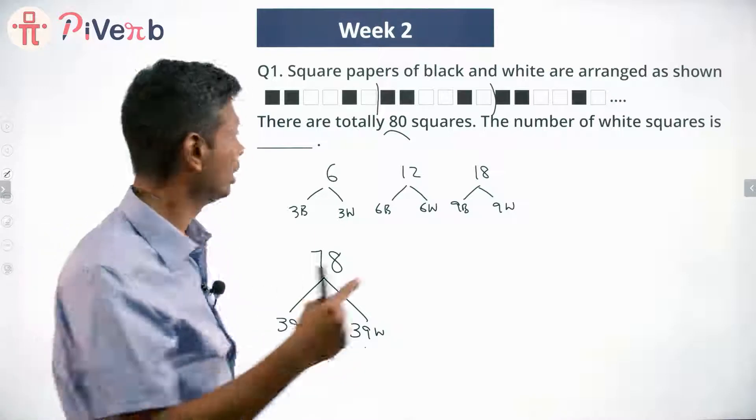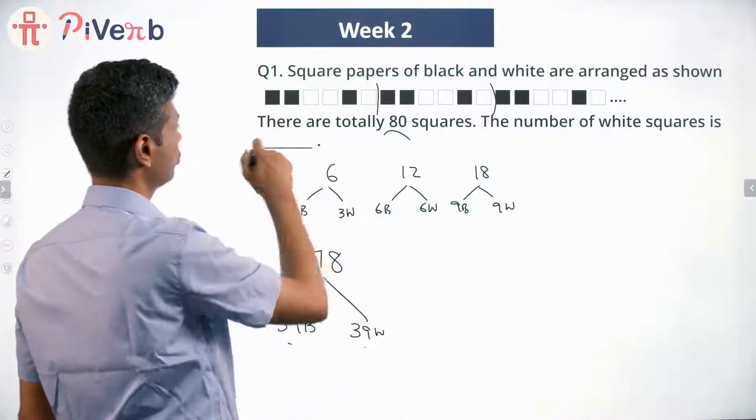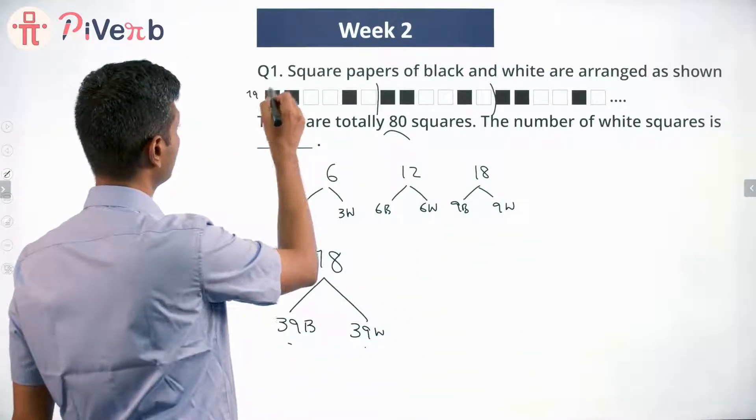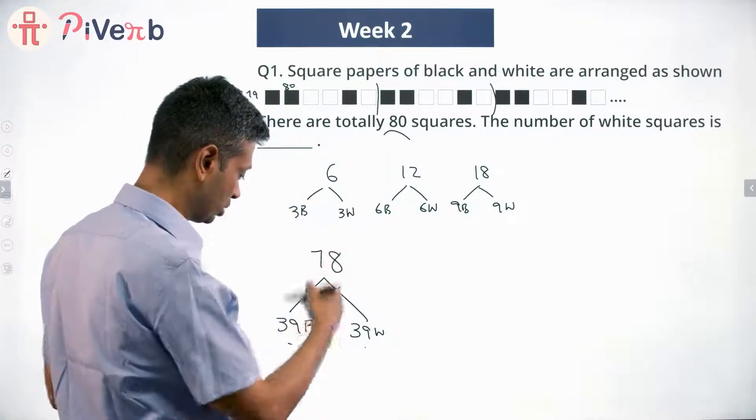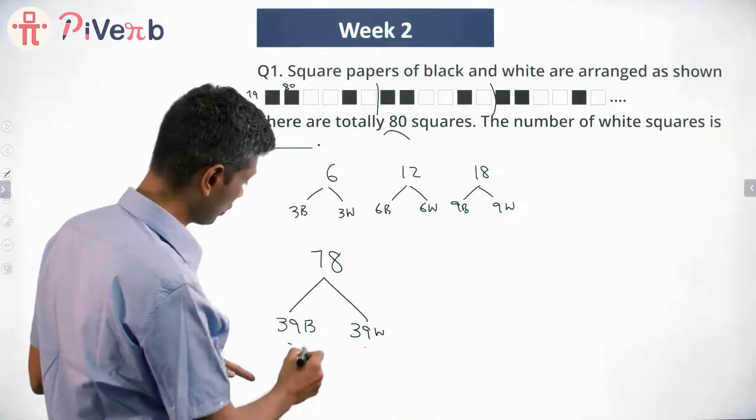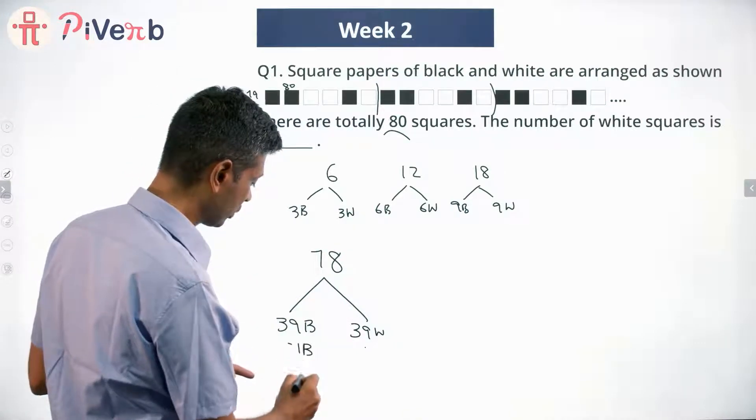Now the 79th square will be back to this beginning. So this will be the 79th square, this will be the 80th square. Or from 78 onwards, the 79th square is a black one, the 80th square is a black one.